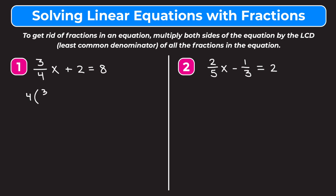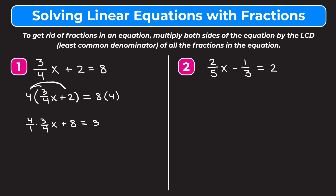So we're going to multiply the left side by 4 and the right side by 4. We're going to distribute this 4 on the left side. 4 times 3/4 is like 4 over 1 times 3/4 — I'm going to write it this way to show you how to quickly simplify this. Then 4 times 2 gives us positive 8, and on the right 8 times 4 is 32. The reason we multiplied by the denominator is because it cancels out with the denominator of our fraction, so both 4s turn into 1, leaving us with 3x plus 8 equals 32.